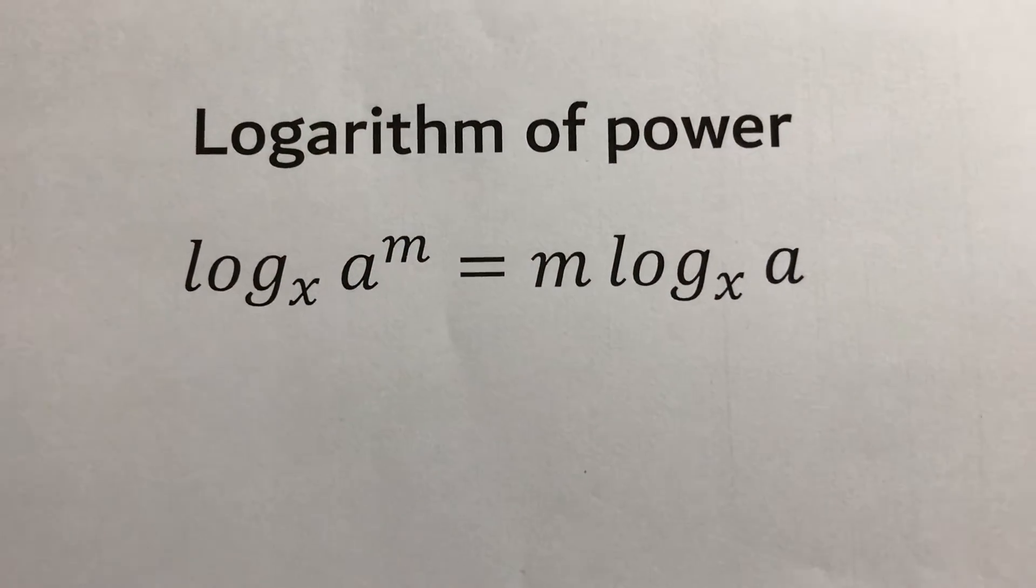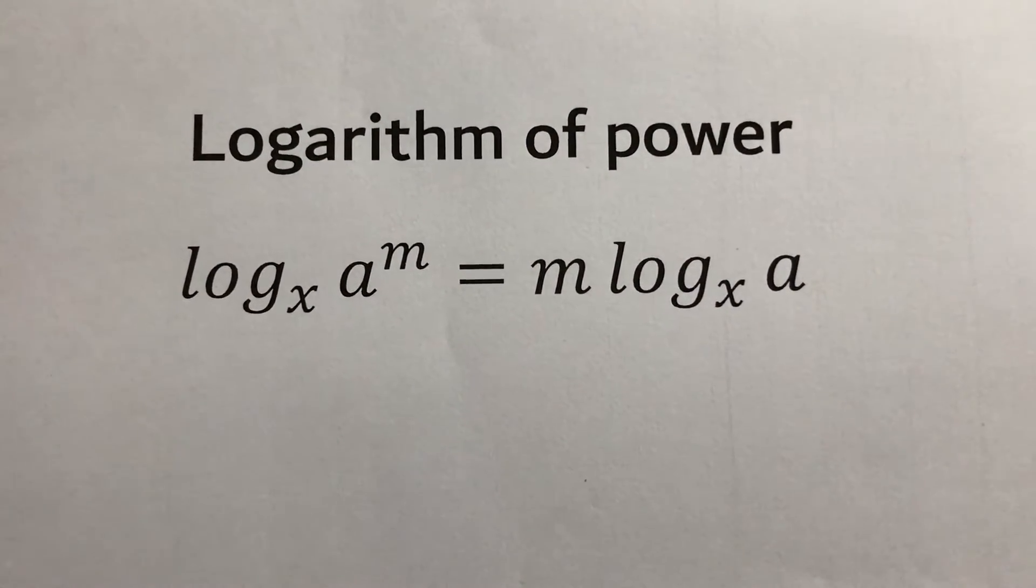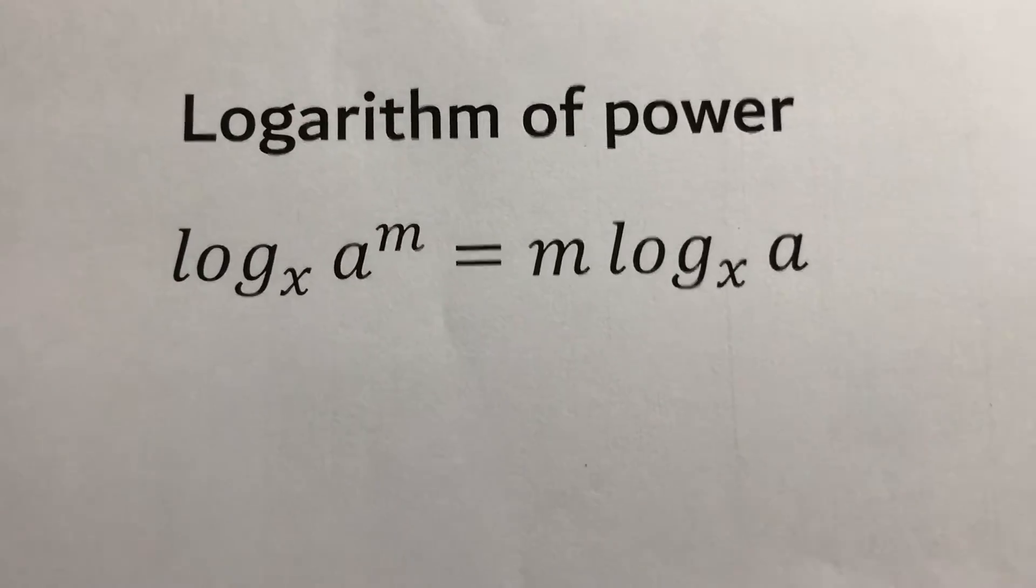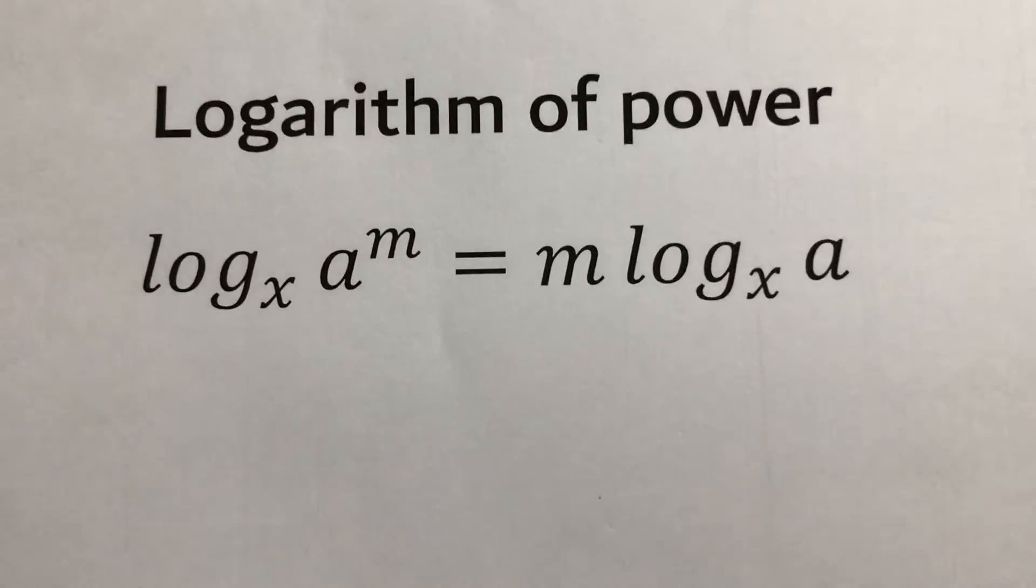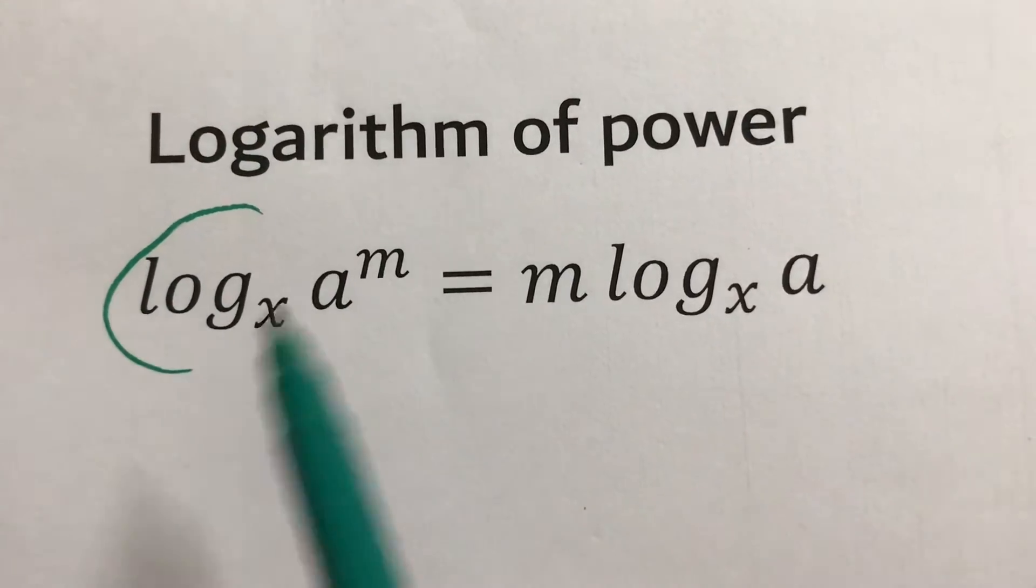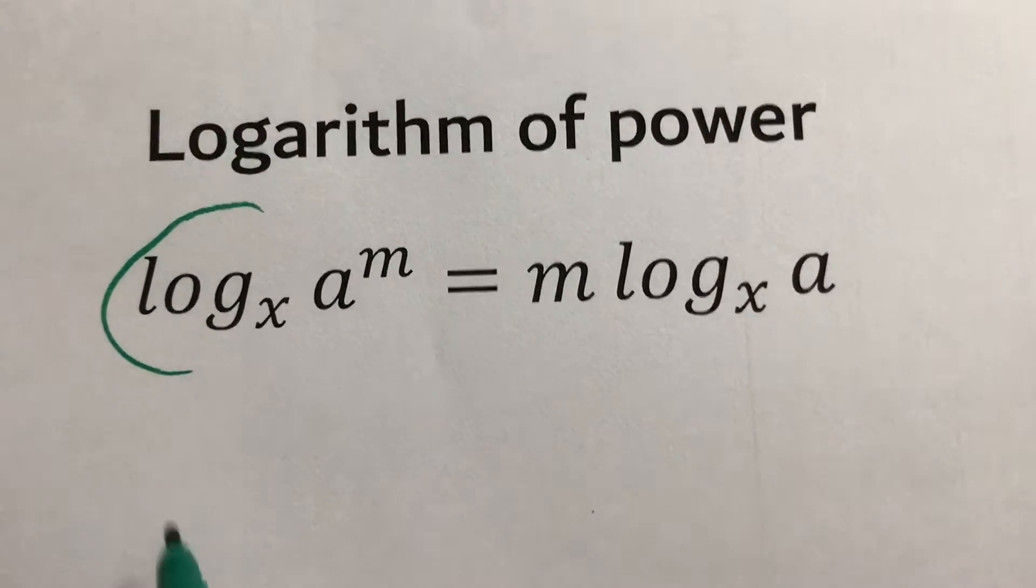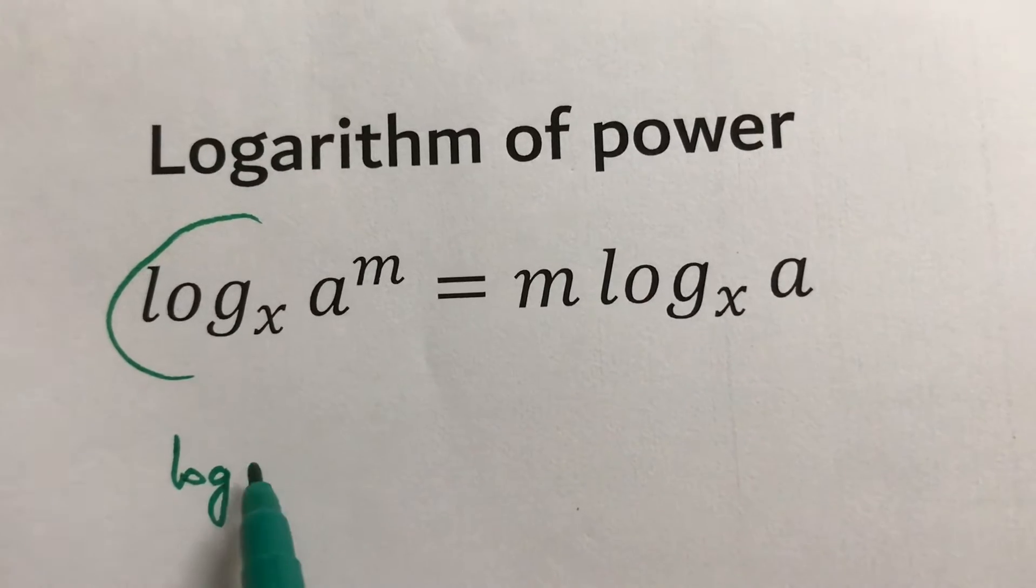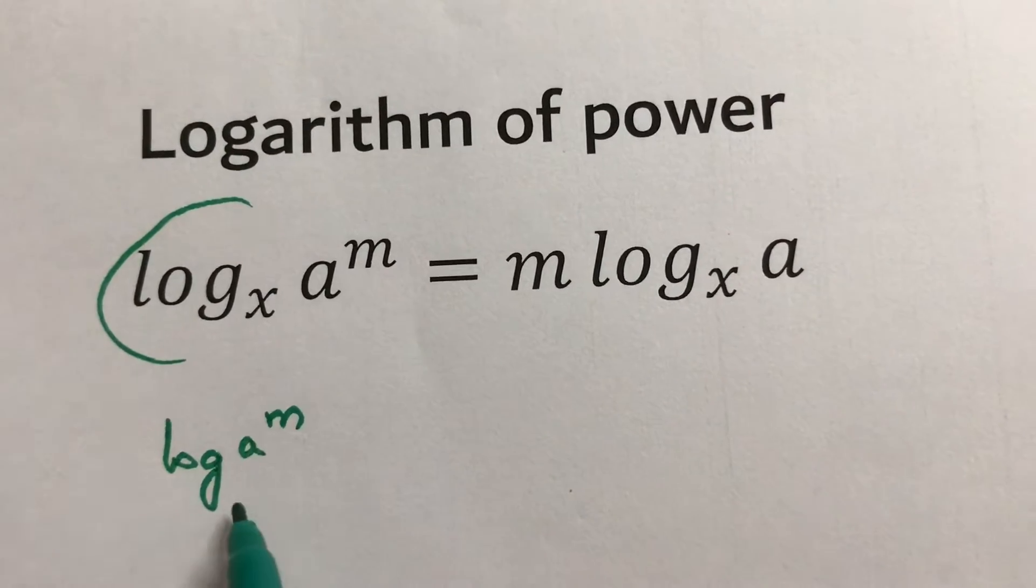The logarithm of power property states that log base x of a to the power m equals m times log base x of a. Consider the first term as p, so log base x of a to the power m equals p.